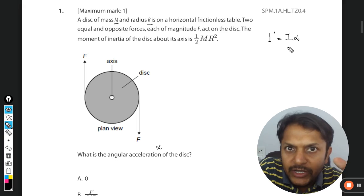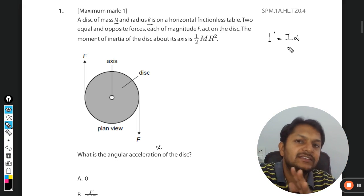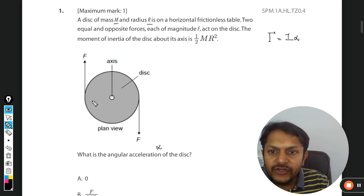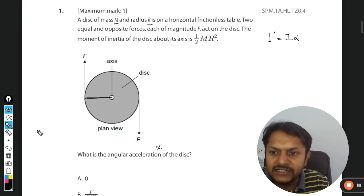So you must know how to find the torque. There are two ways of doing that. The first thing is that this is the force F, and the distance—the perpendicular distance from the axis—is the radius R.